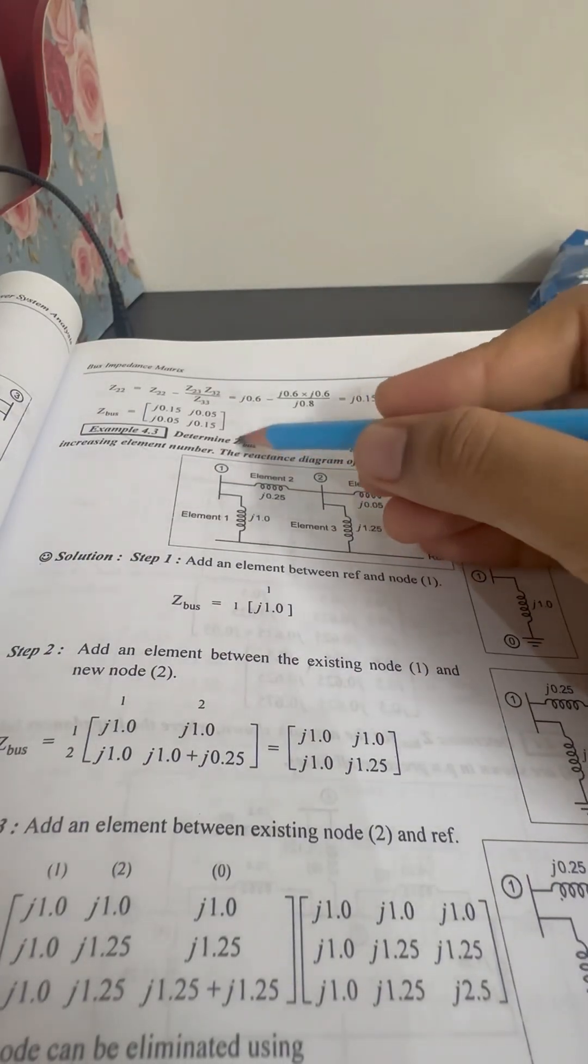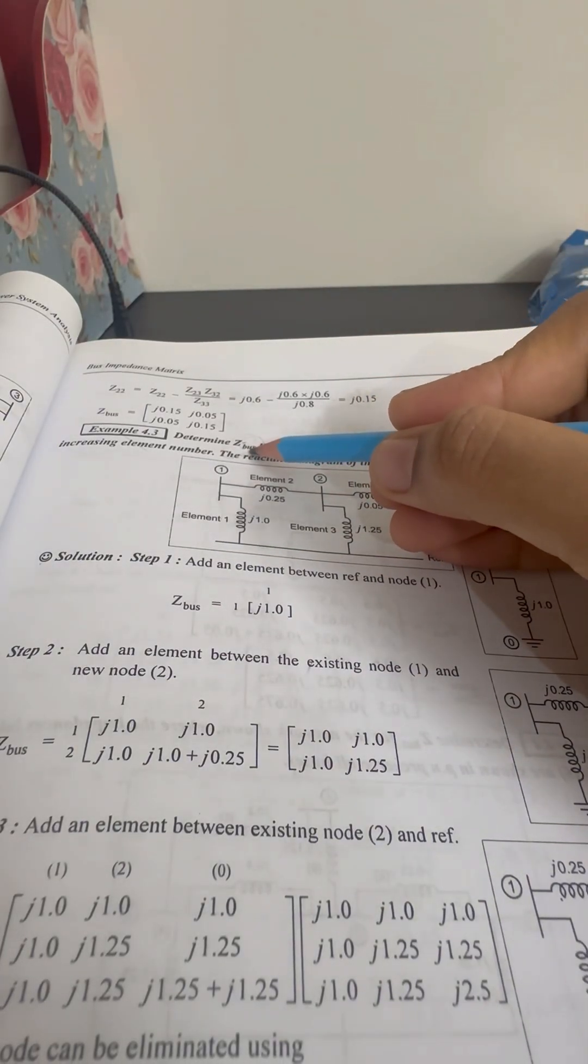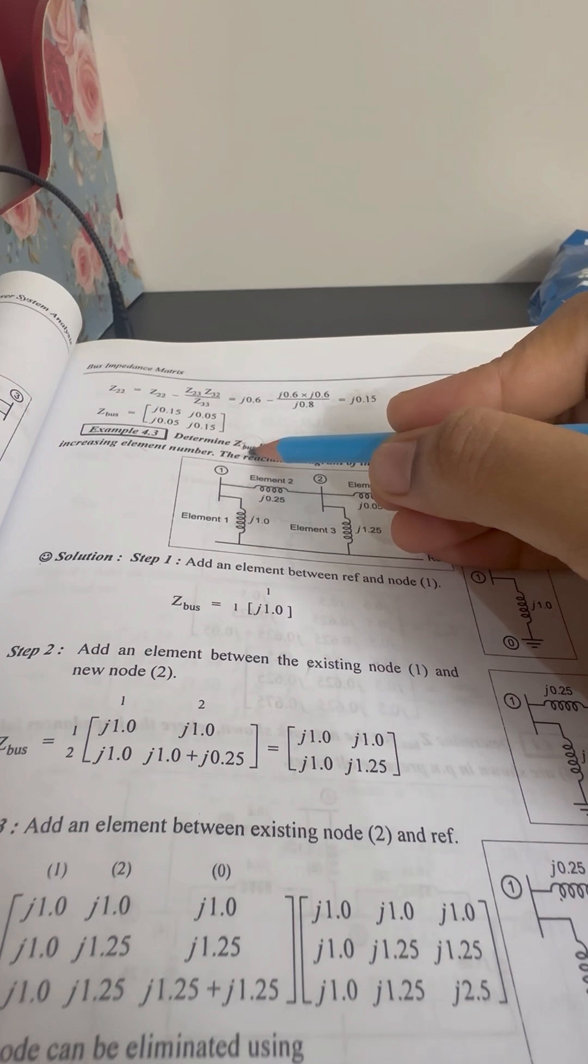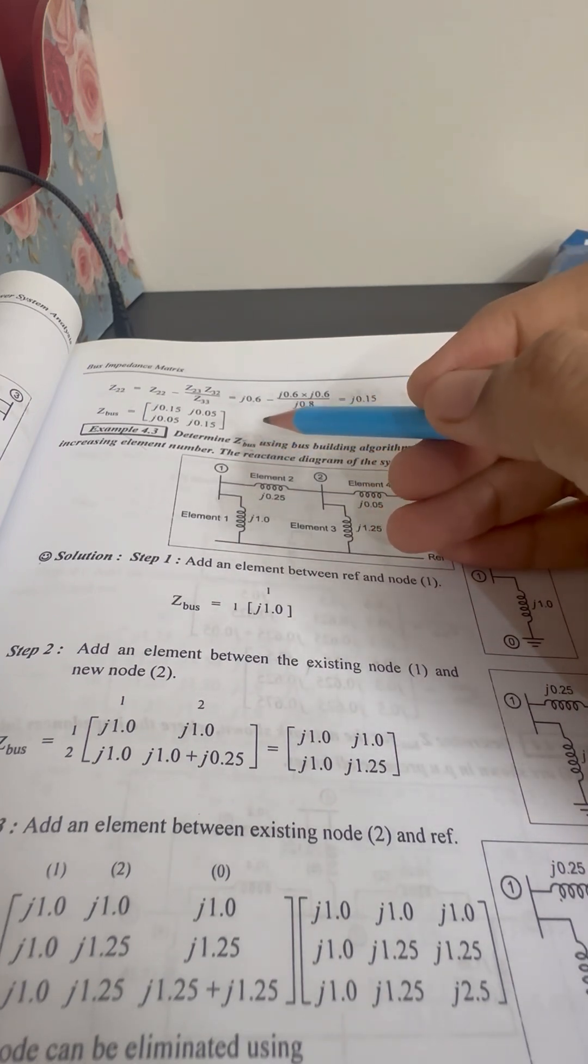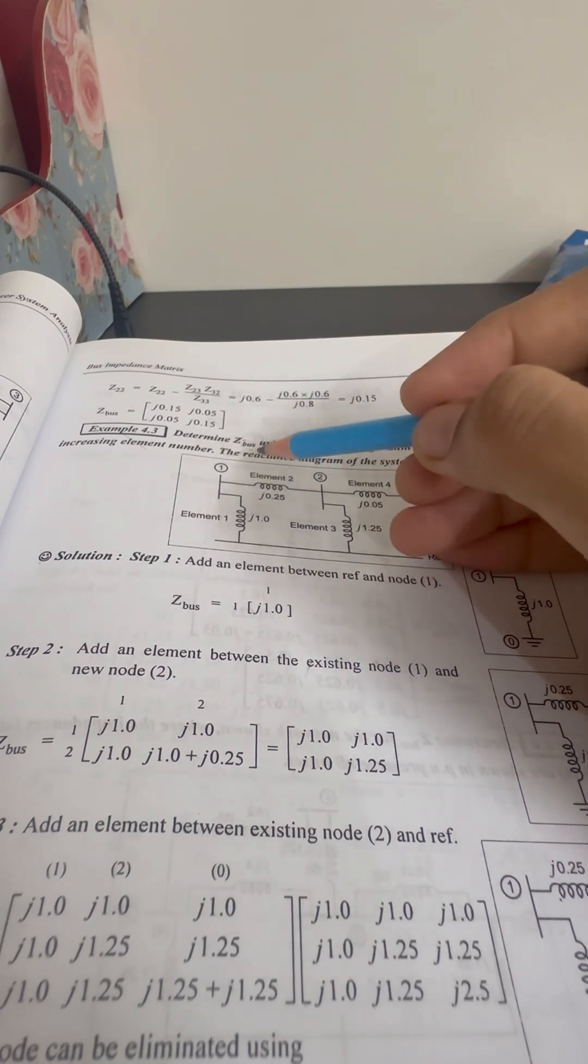We are going to talk about Z-Bus Matrix. Z-Bus Matrix is the Bus Impedance Matrix. We can do this in two methods. Either the Admittance Matrix is the inverse of the Z-Bus Matrix.